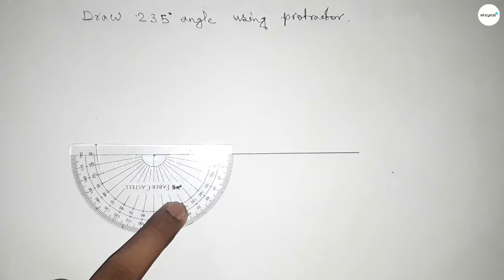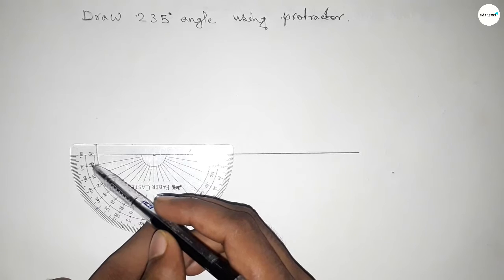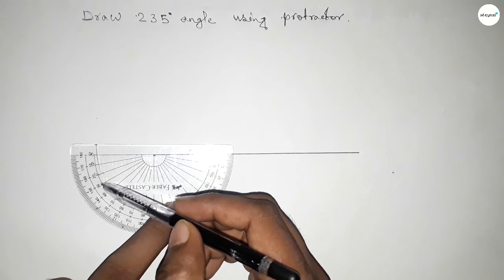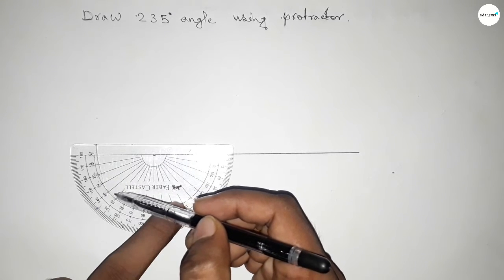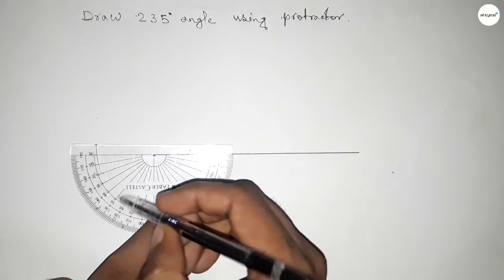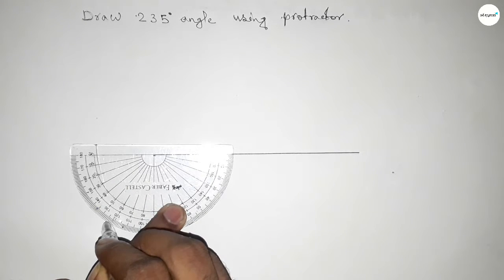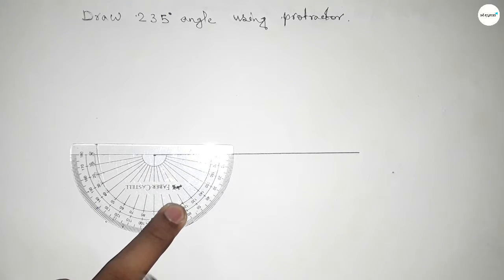So this is 20, 30, 40, 50, and this is 55 degrees. By adding 55 degrees with 180, then we can get 235 degree angle.